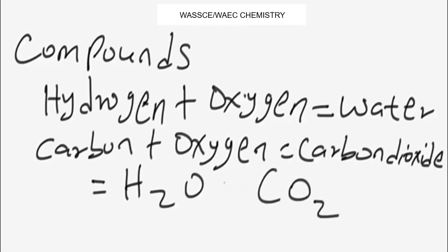This regards the number of atoms in a compound. In water, we have two atoms of hydrogen and one atom of oxygen. In carbon dioxide, we have one atom of carbon and two atoms of oxygen making up the compound.